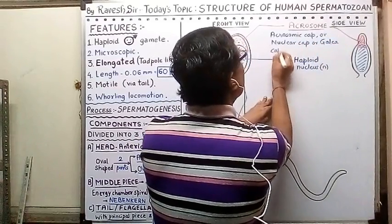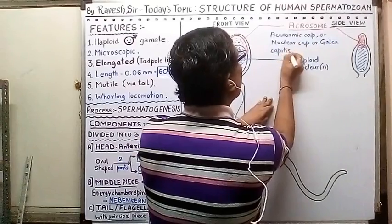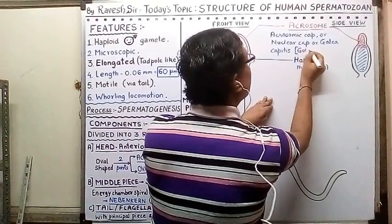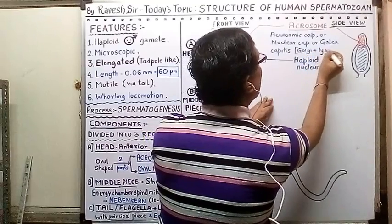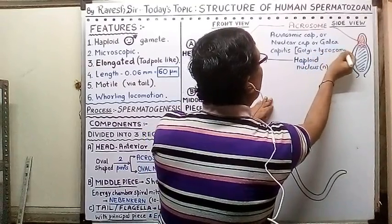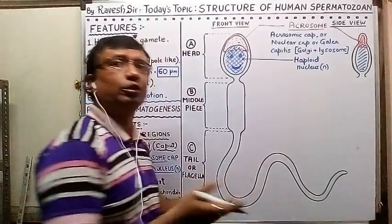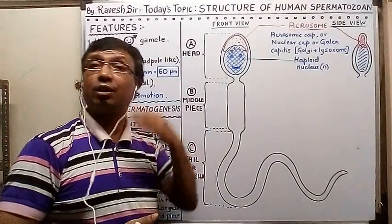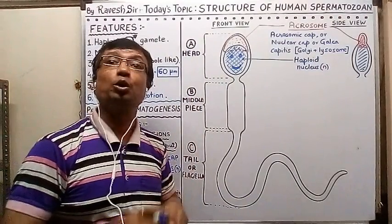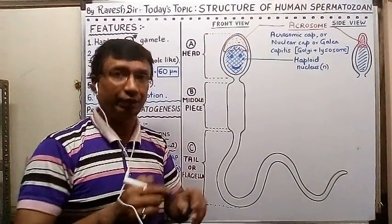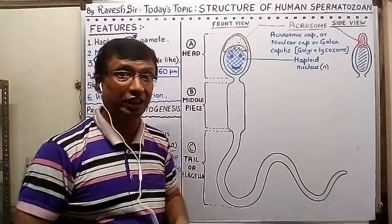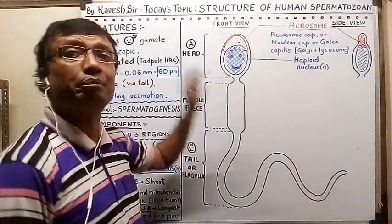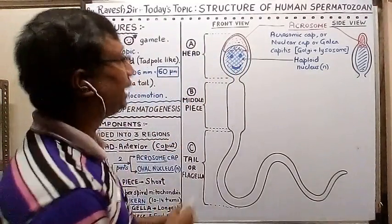This cap-like structure — the acrosome — is actually a combination of Golgi apparatus plus lysosome, and contains enzymes. It has two outer layers: a corona radiata and zona pellucida, which it can dissolve — we will learn this during the fertilization part. The haploid nucleus contains the male genetic information.